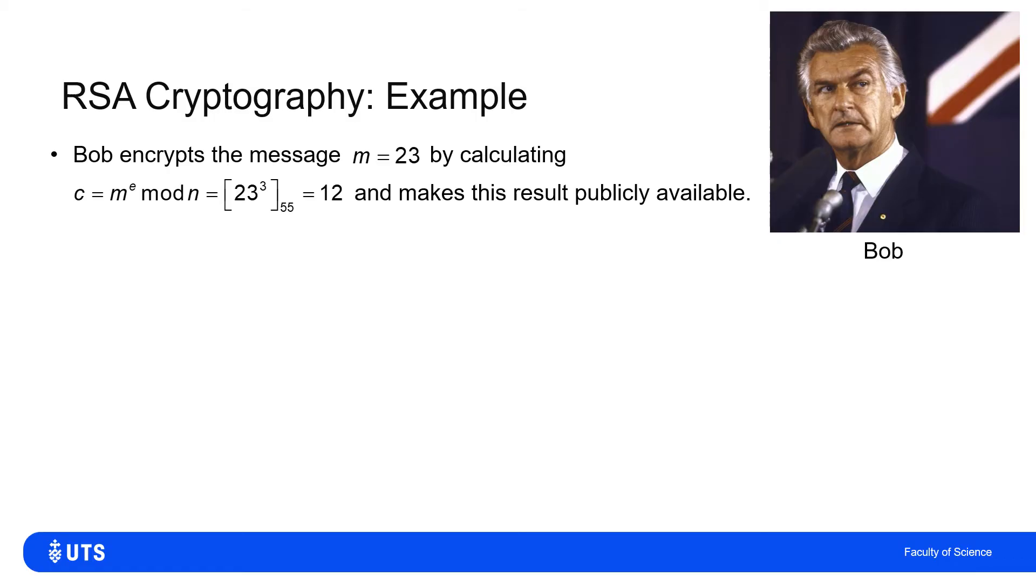So to do this, he encodes that by calculating C, which is m to the e mod n. So he knows m, he's chosen that to be 23, that's his message. He knows Alice's public key e, and he knows the product of the two primes, which is n is 55. So he calculates 23 to the power of 3 mod 55 equal 12.